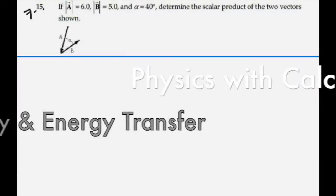Here's problem 715. If the magnitude of A is 6 and the magnitude of B is 5 and alpha is equal to 40 degrees, determine the scalar product of the two vectors shown.